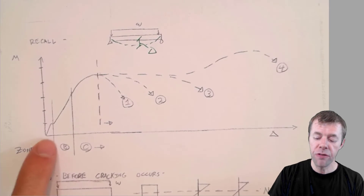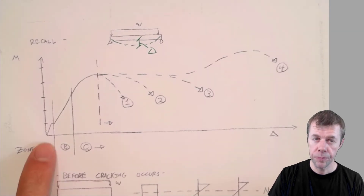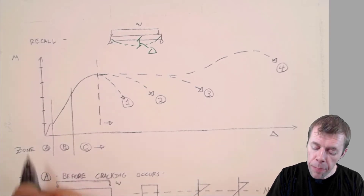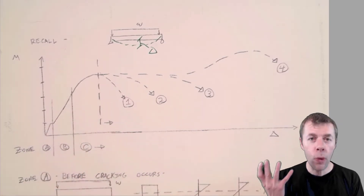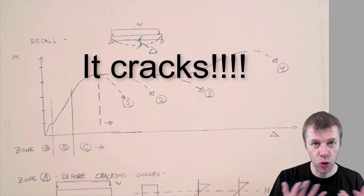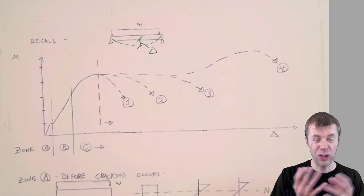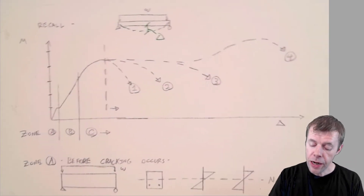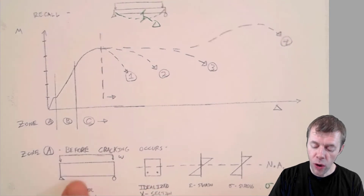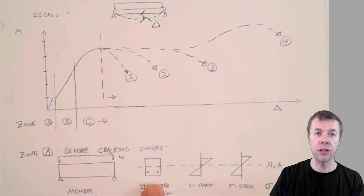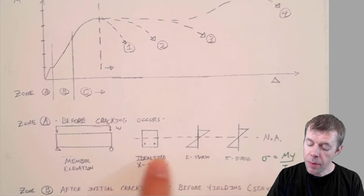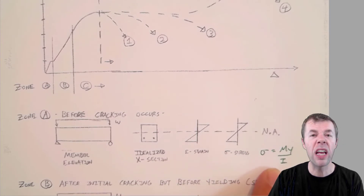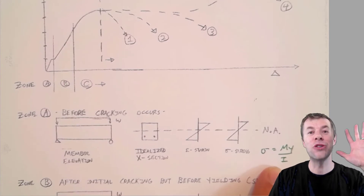Let's talk about Zone A. As we very first start to load up the beam, it's got a pretty high stiffness — stiffness is the slope. It goes up and up and then it jumps. Why would it jump? Because it cracks. Once it cracks, that cross section instantly changes. But before cracking, if we're still in Zone A, here's our member — there are no cracks. Here's our idealized section, the strain, the stress. Everything you learned in strength of materials, sigma equals MY over I, it works.